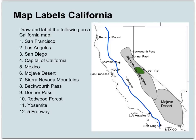First of all, San Francisco. San Francisco is located right there, and there are two little peninsulas that come down right here together. San Francisco is located on that southern peninsula. The second place you need to be able to find is Los Angeles.